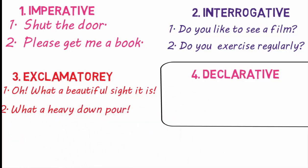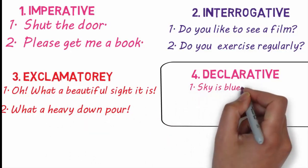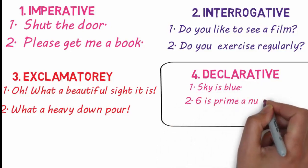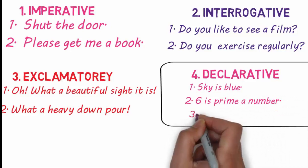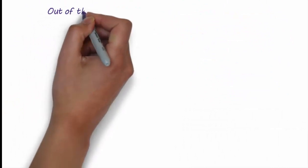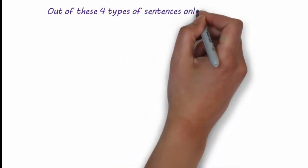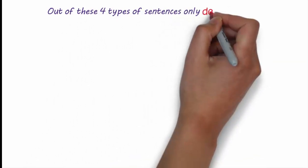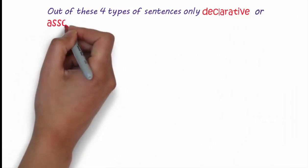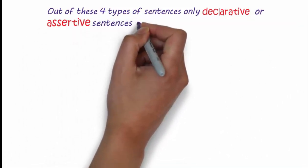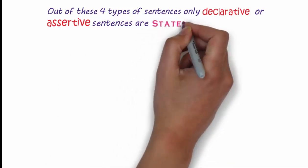Declarative: sky is blue. Six is a prime number. Two plus three is equal to six. Out of these four types of sentences, only declarative or assertive sentences are statements, which is either true or false but not simultaneously.